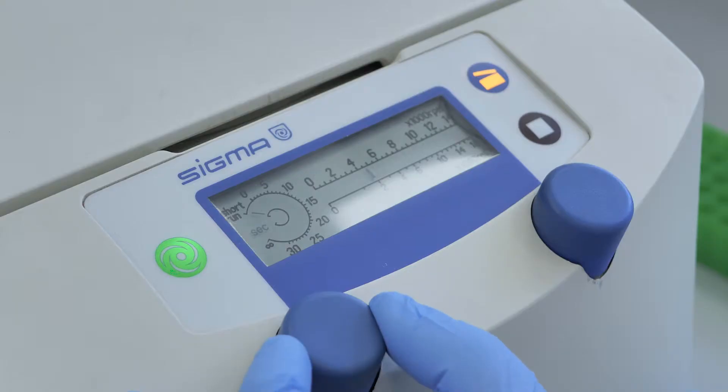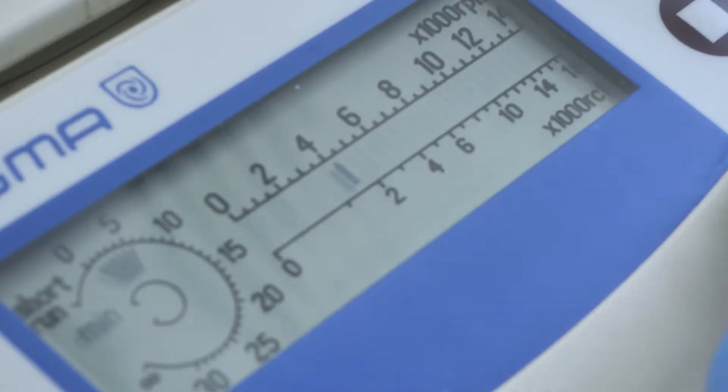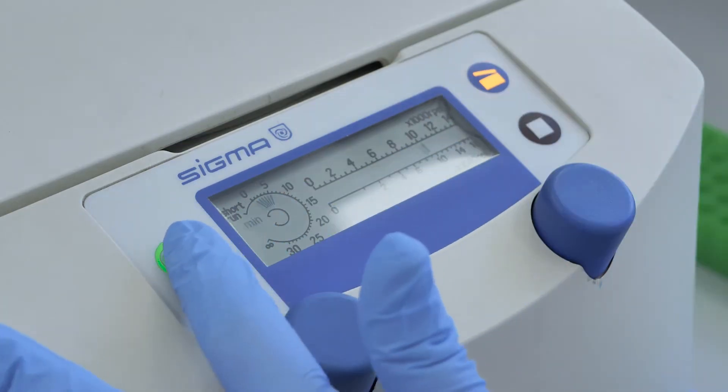Set the time for the spin. Set the desired rotations per minute (RPM) or relative centrifugal force (CF). Press the green start spin button.